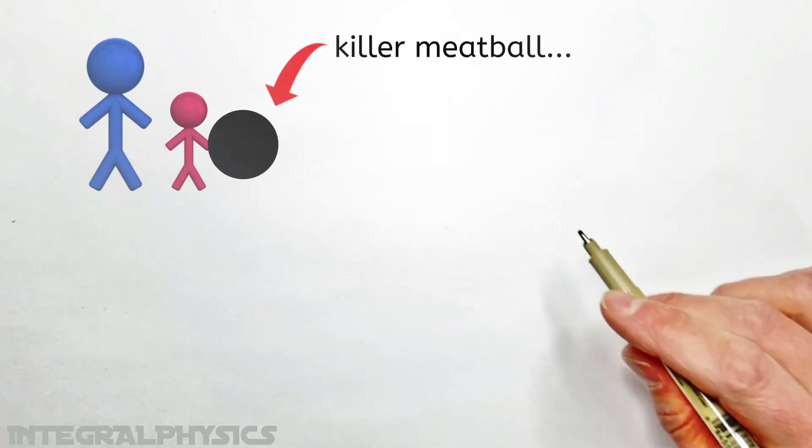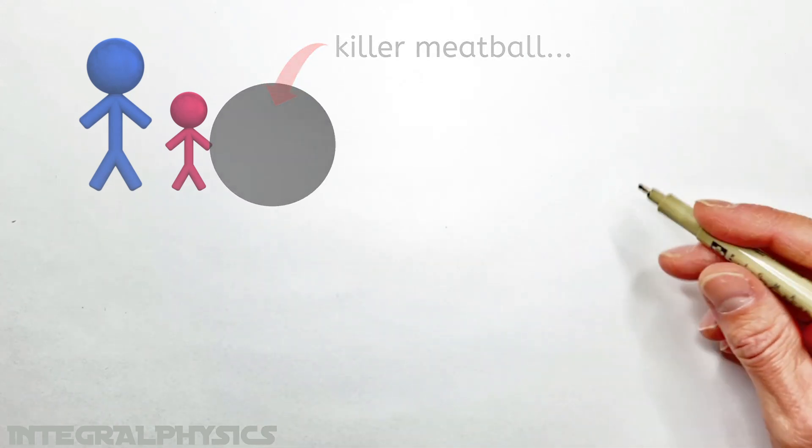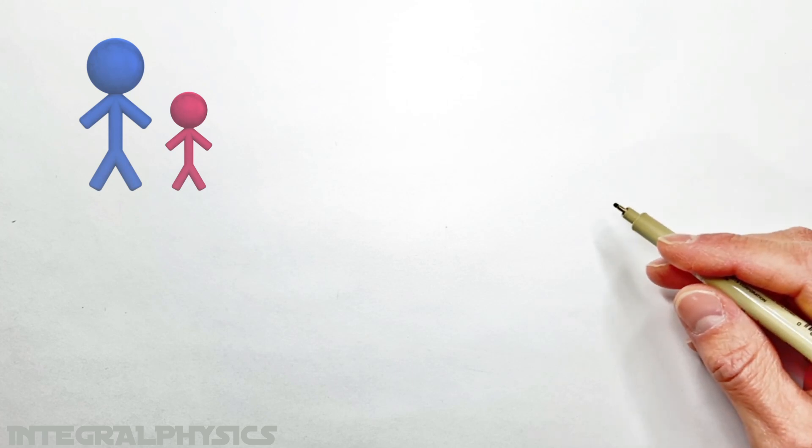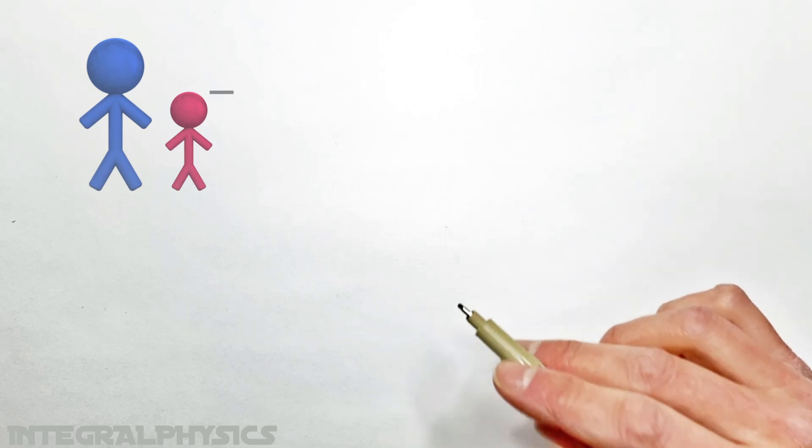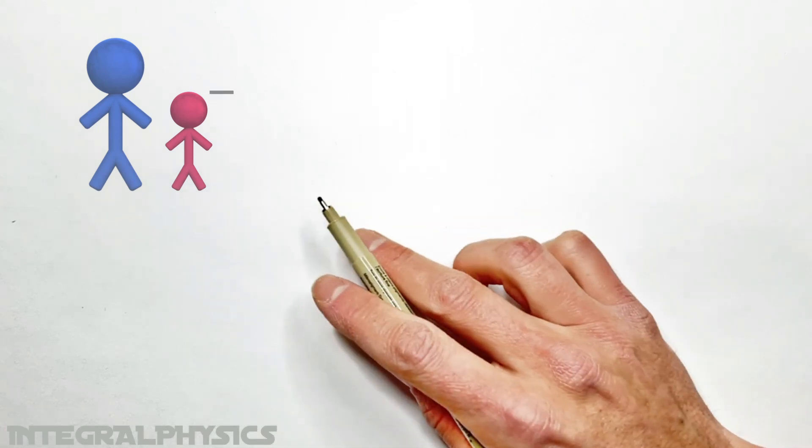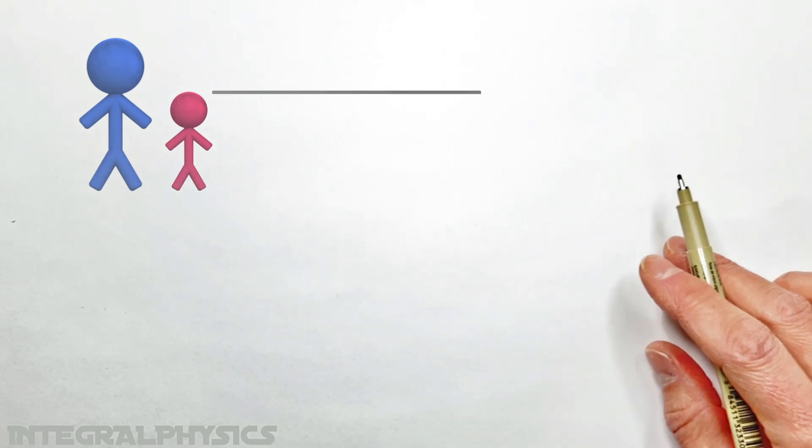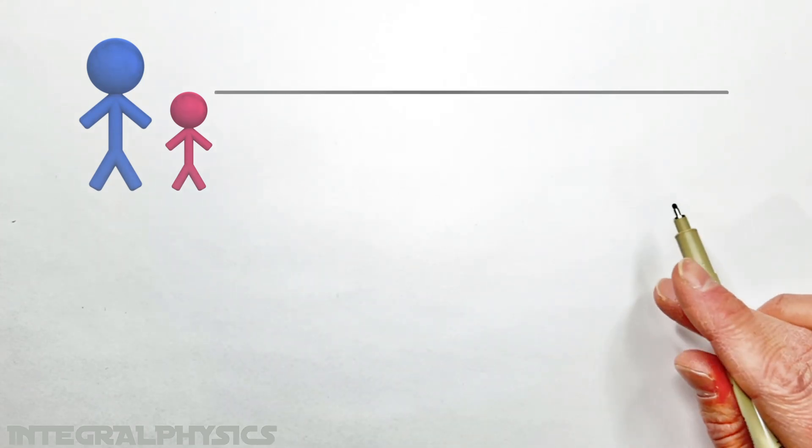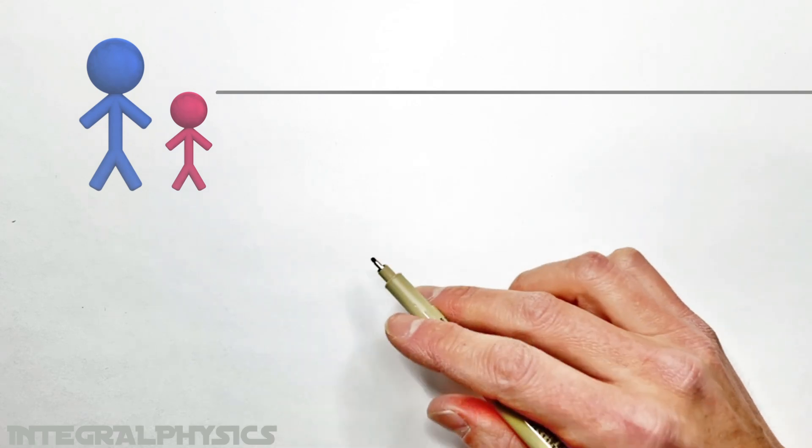I mean, the meatball would eventually get so big that it would turn into a black hole and we'd all get sucked in and die. But the noodle, that's the weird one. If a noodle went on forever, it would have infinite mass. But even still, it would barely pull on you at all.